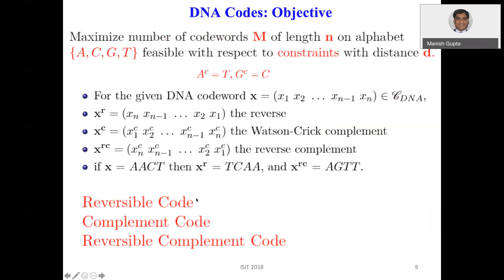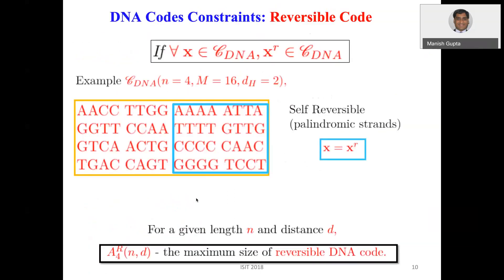Motivated by these operations, we can define reversible codes, complement codes, and reversible complement codes. A DNA code C_DNA is called reversible if for every x in C_DNA, the reverse x^r is also in C_DNA — that is, the code is closed with respect to the reverse operation.